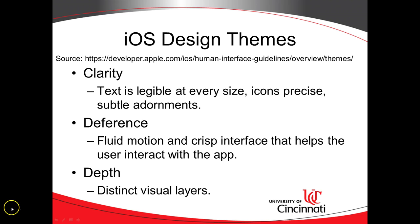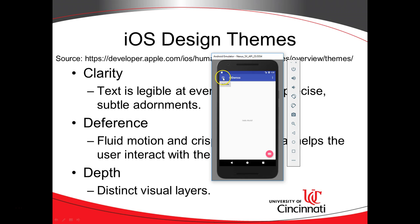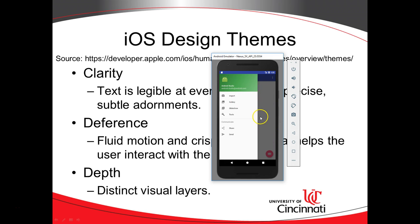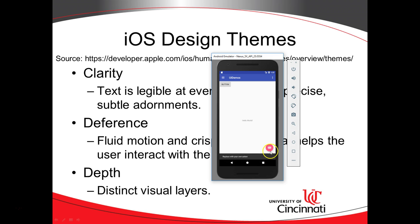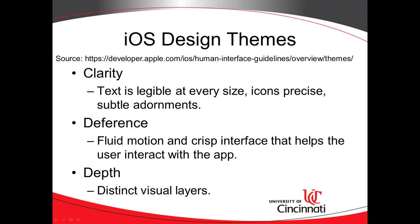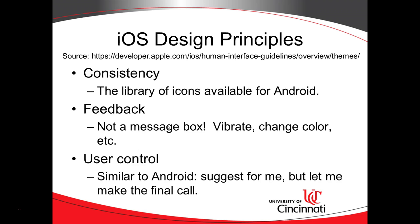Then we have depth, which refers to distinct visual layers. We'll see more of this when we discuss material design, but if you look at an app that has a navigation drawer, you'll notice that it pops out and shades what's behind it. You can click behind it to go back to that location. Also, there's a subtle shadow under the floating action bar, so this is a good example of having distinct visual layers.